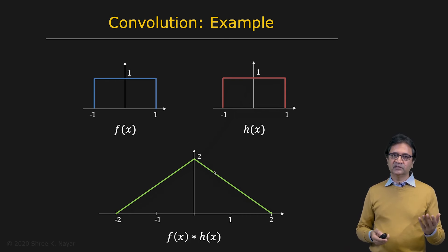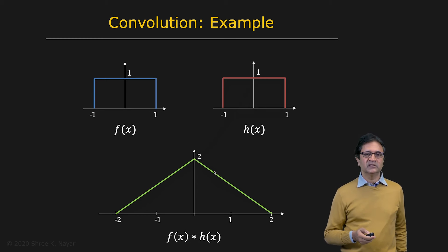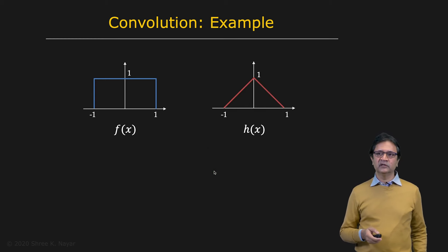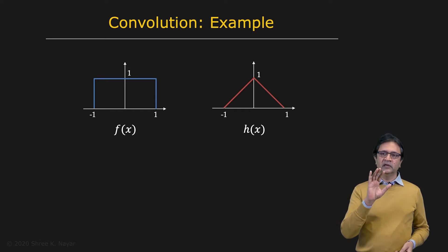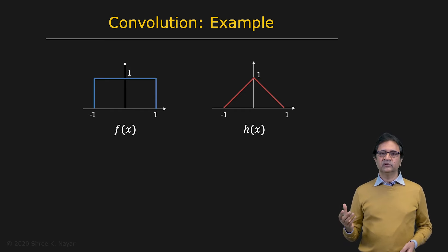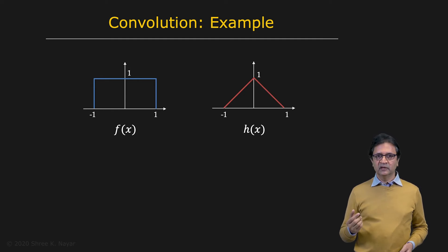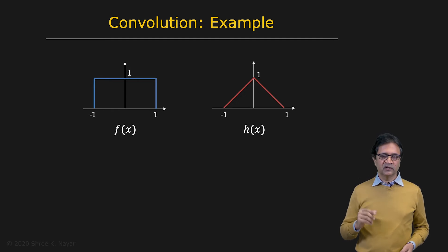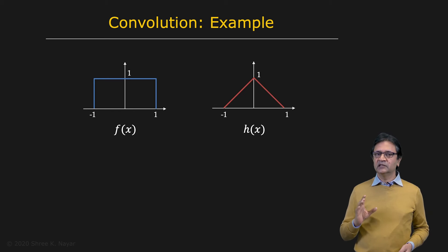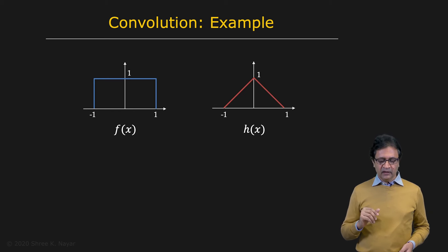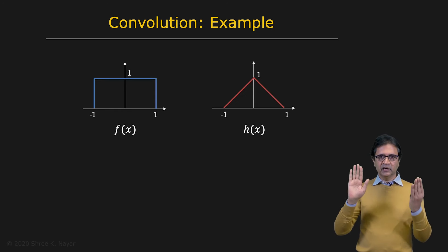Now, that's a simple case obviously. Let's take a look at a slightly more difficult case. So here you have a rectangle again, but you're going to convolve it with a triangular function. Can you just take a moment to think about what the result might be? Well, it turns out it's a little bit more complicated here, because as a triangle, you're going to take your triangle, flip it, then take it to minus infinity, and slide it.